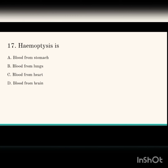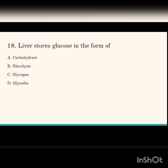Next question: hemoptysis. The options are blood from stomach, blood from lung, blood from heart, and blood from brain. Hemoptysis means blood from the lung. Blood from the stomach is hematemesis.